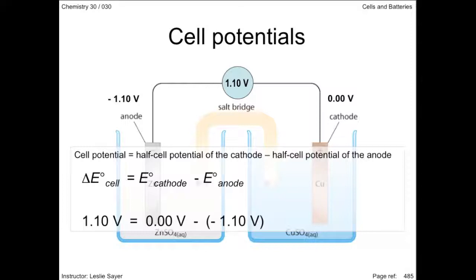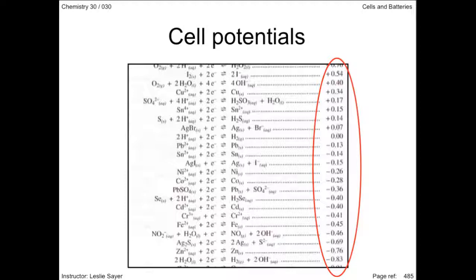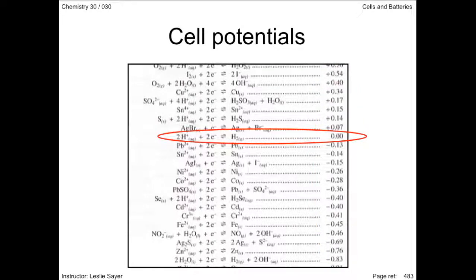Your data booklet lists a table of selected electrode potentials — these are the numbers on the right side of the table of reduction half-reactions, measured under standard conditions. The half-cell potentials listed are defined as the potential difference between any one of these half-cells and the hydrogen half-cell. Chemists have agreed that the hydrogen half-cell is the reference half-cell to which all other half-cells are related.